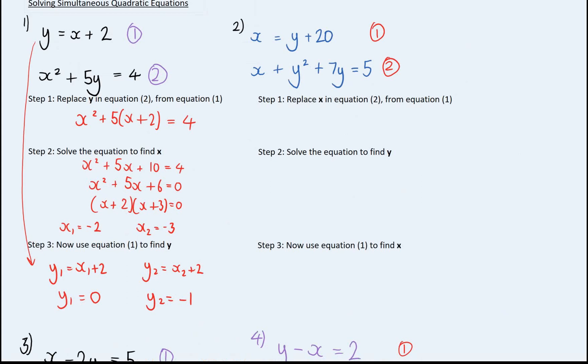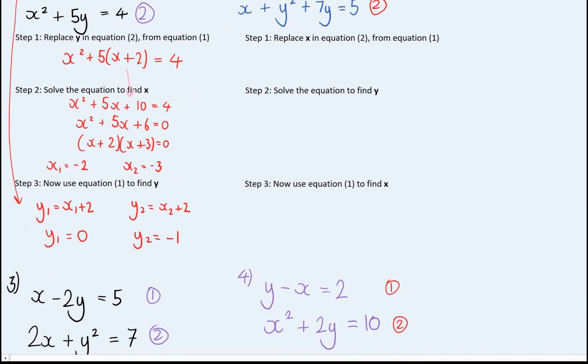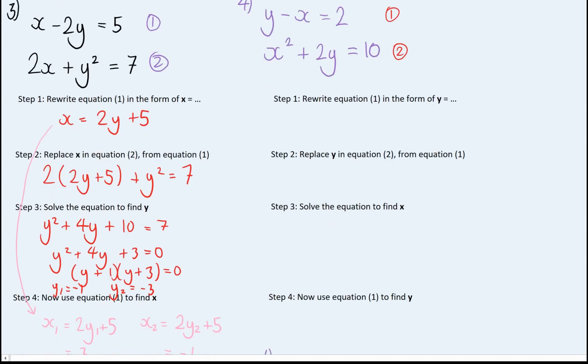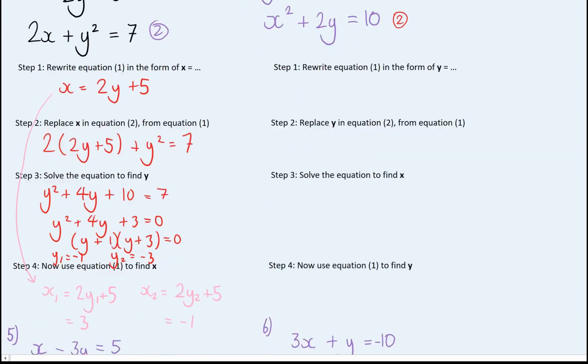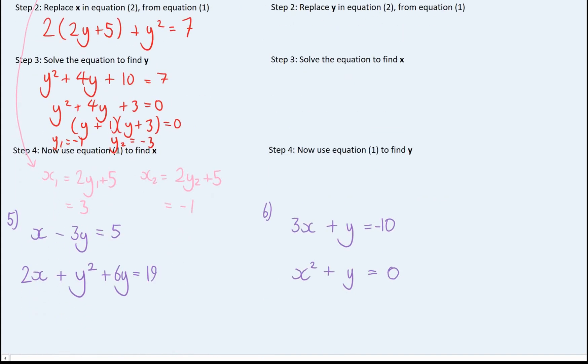So question 1 was a slightly easier one. Replace y. Make sure you expand the bracket correctly. So I go off from c. And then go from there. Question 3. Same idea. So you have to rewrite x equals 2y plus 5 first before I plug it all in. And that gives my pairs of solutions.